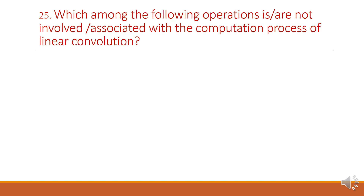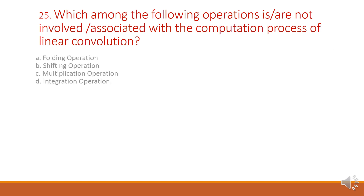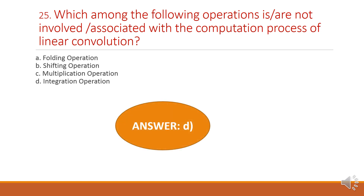Next question: which among the following operations is involved or associated with the computation process of linear convolution? Option A: folding operation. Option B: shifting operation. Option C: multiplication operation. Option D: integration operation. The answer is option D, integration operation.